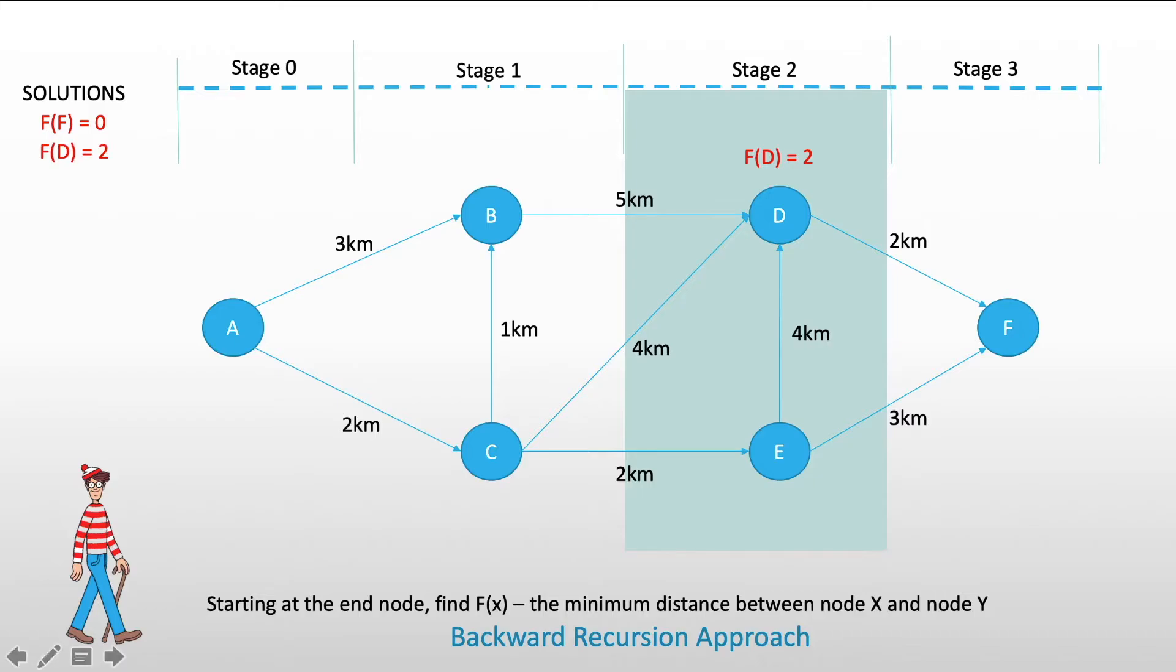What is more interesting is our node E. From node E, we can actually pass by from D going to F, or directly from E to F. What we have to do here is to find the minimum between the two paths. So, either E to F, which is 3 kilometers, or 4 plus f of D, which is equal to 6. In this case, the minimum value is 3. So, the value of our f of E is equal to 3.